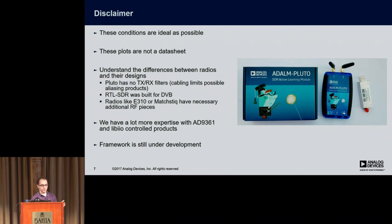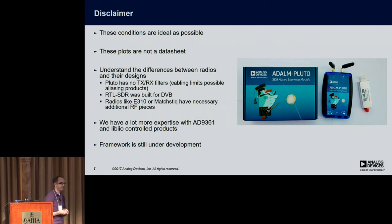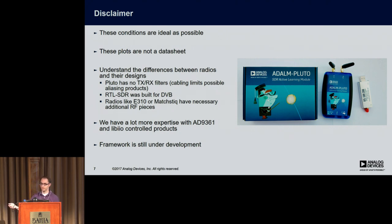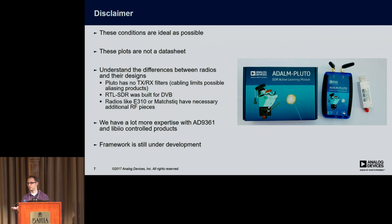There are differences between transceivers. As Robin mentioned, an RTL is more of a data capture device — it's not really a radio. There are reasons the E310 costs more: it has filters, which are super important, as Robin showed with the harmonic demo yesterday. Filters are not cheap, especially when your transceiver works from 70 MHz to 6 GHz — a lot of times they'll cost more than the transceiver. We also have a lot more expertise programming our own stuff, so the data might be slightly skewed since we know all the knobs to turn for our device.